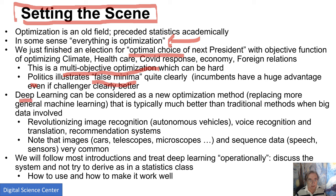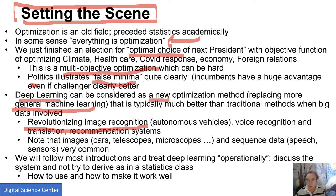Deep learning is essentially a new optimization method. It wasn't there when I started optimization, and it is replacing or supplementing general machine learning. It is significantly better than previous methods. We can see it revolutionizing image recognition for autonomous vehicles, analyzing surveillance data for faces, voice recognition, translation, and the recommender systems used by Amazon and Netflix.